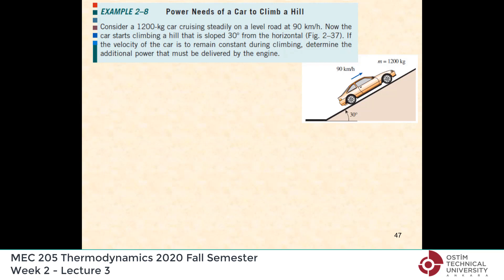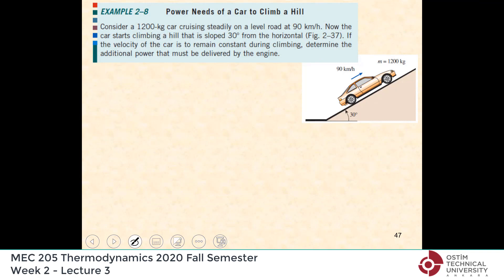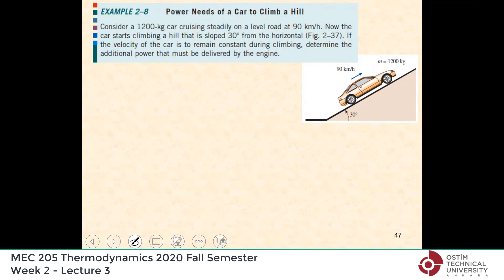We have a car, and the mass of the car is 1200 kilograms, cruising steadily on a level road at 90 kilometers per hour. It is a 30-degree slope road. If the velocity of the car is to remain constant during climbing, what is the additional power that must be delivered by the engine?